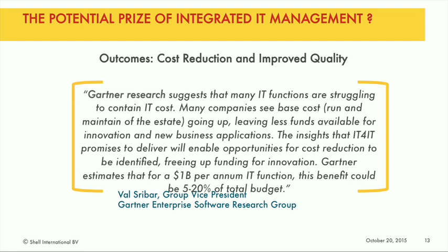If any of those issues struck home, you'll probably be sitting there going: yeah, that's going to cost a lot of money — who on earth is going to invest in IT for IT and what is the business value? Well, we've done some work with Gartner, and Val Schreiber of Gartner says: if you get this back-office IT for IT stuff right — all that ticketing, monitoring, portfolio management, all that internal plumbing — you could save between 5 and 20% of your IT budget. Let me let that sink in. If you get that right, you could take 5 to 20% off your entire IT budget.